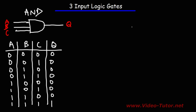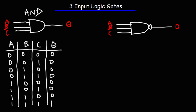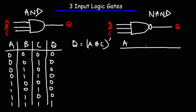Now let's talk about the NAND gate. The symbol looks very similar — the exception is that we have a circle at the output; everything else is the same. We use the same three inputs A, B, and C with output Q. The formula for the NAND gate is Q = complement of (A × B × C).